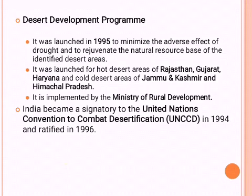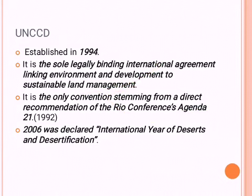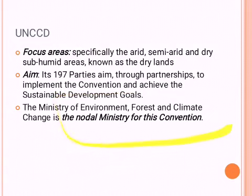The United Nations Convention to Combat Desertification (UNCCD), established in 1994, is the only legally binding agreement for environment and sustainable land development. It emerged from the Rio Conference of 1992, recognizing that deserts also need conservation measures. 2006 was declared the International Year of Deserts and Desertification. The convention covers arid, semi-arid, and dry humid areas with 197 parties committed to implementing it. In India, the Ministry of Environment, Forests and Climate Change is the nodal ministry for aligning with UNCCD commitments.